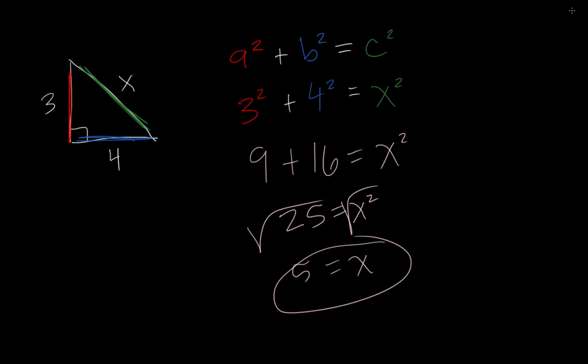Alright, so let's try another one. Alright, so we're going to say 10 squared plus 7 squared equals x squared. So that's 100 plus 49. 149 is not a perfect square.